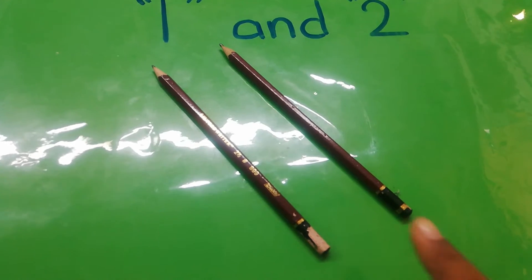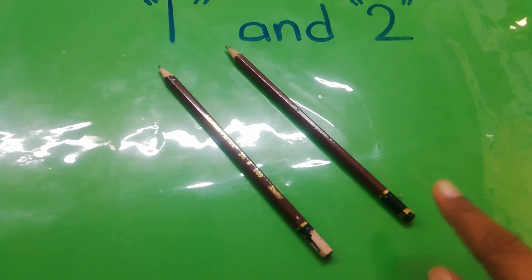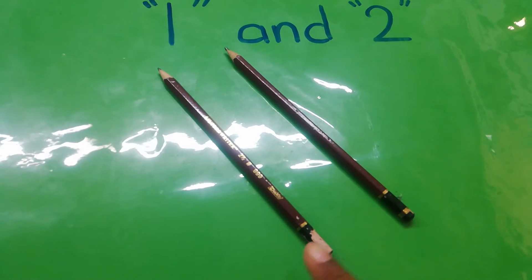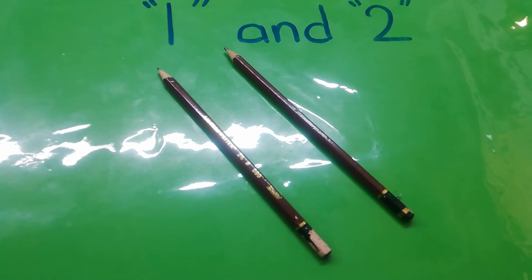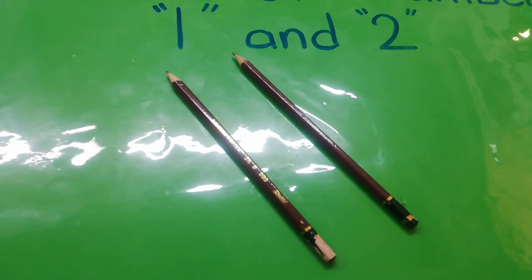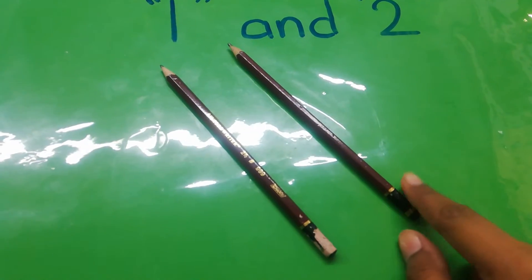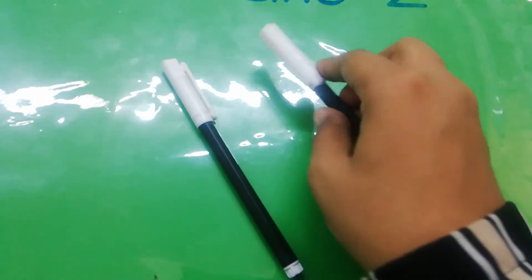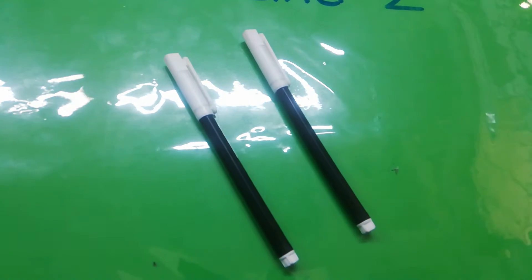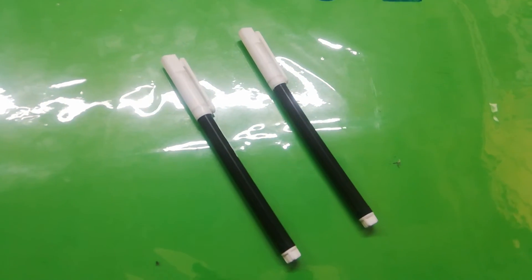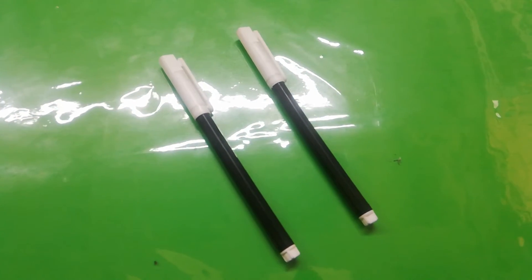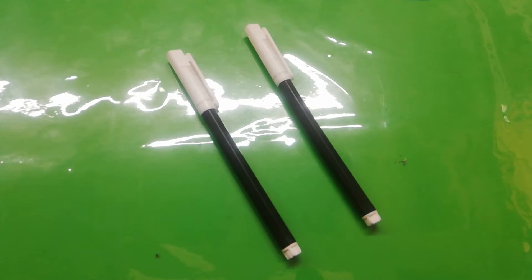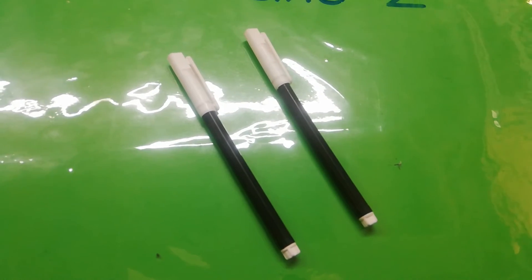Now move to the next object. How many pencils are there? There are 2 pencils. How many pencils? 2 pencils. Count with me: 1 and 2. Again, count with me: 1 and 2.